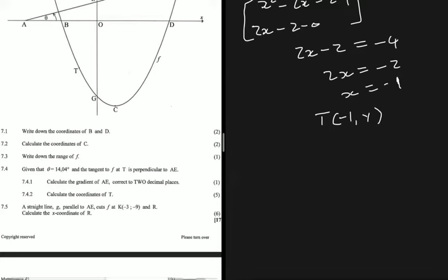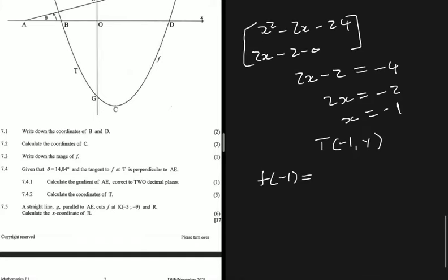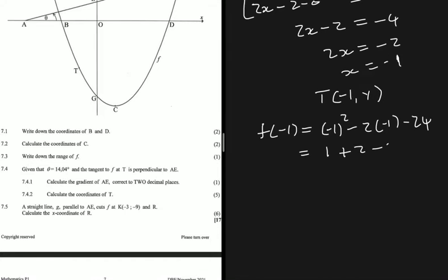To find the y-coordinate, we substitute x = -1 back into f(x): f(-1) = (-1)² - 2(-1) - 24 = 1 + 2 - 24 = -21. So the coordinates of T are (-1, -21).